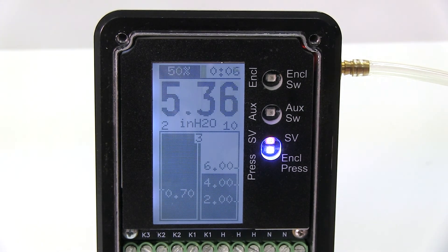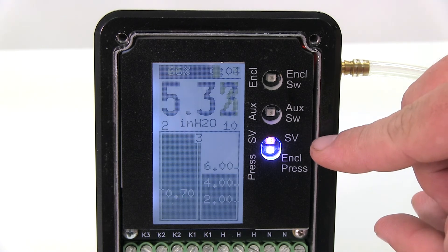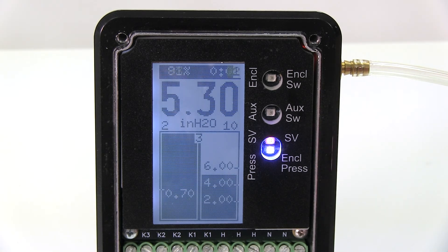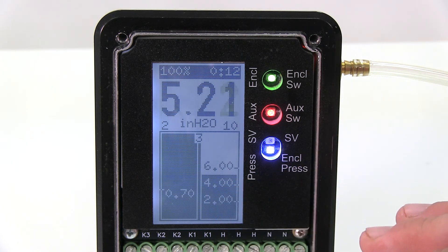So all these LEDs represent - there's four LEDs. In the first slot, we have a blue enclosure pressure LED. Once you get above your P1 setting, the enclosure pressure turns blue.